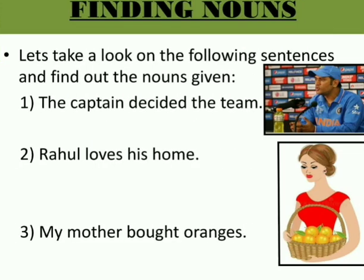Now let's find different nouns in sentences. The first sentence: 'The captain decided the team' — captain and team are the nouns here, and they are both common nouns. In the second sentence, 'Rahul loves his home' — the nouns are Rahul and home. Rahul is a proper noun because it is the name of a boy, and home is a common noun.